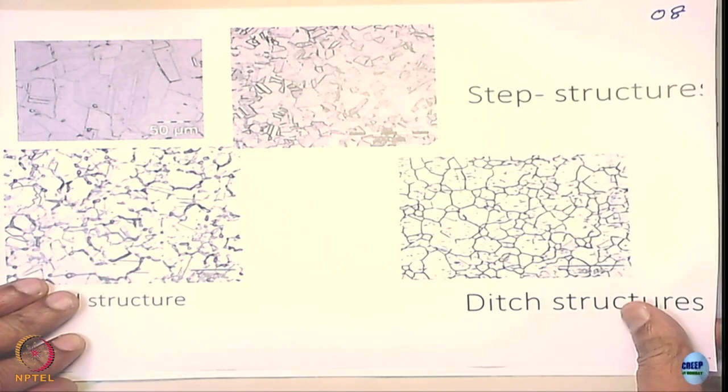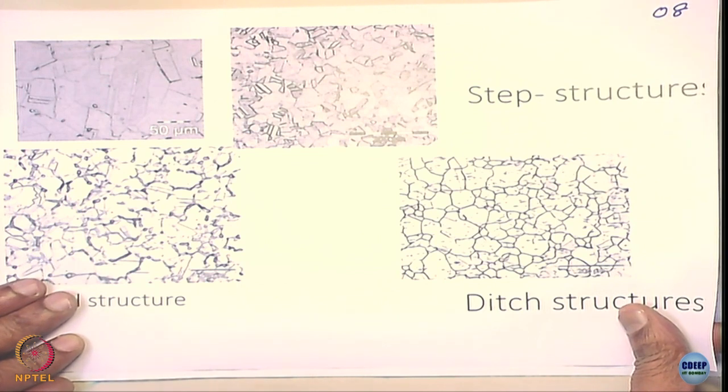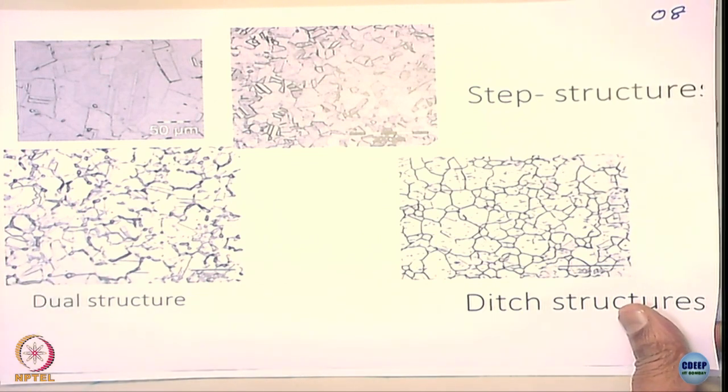We can stop here and continue the discussion in the next class about the mechanism of sensitization or mechanism of intergranular corrosion of stainless steels.